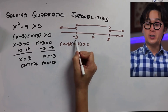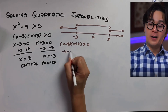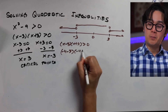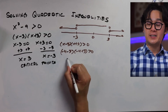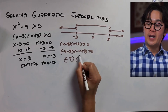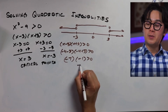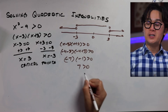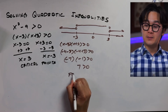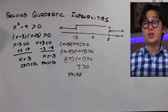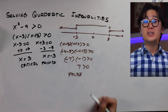For the first partition, let's use x equals negative 4: negative 4 minus 3 is negative 7, and negative 4 plus 3 is negative 1. Negative 7 times negative 1 is positive 7. Is 7 greater than 0? That is false, so this partition is not part of the solution.